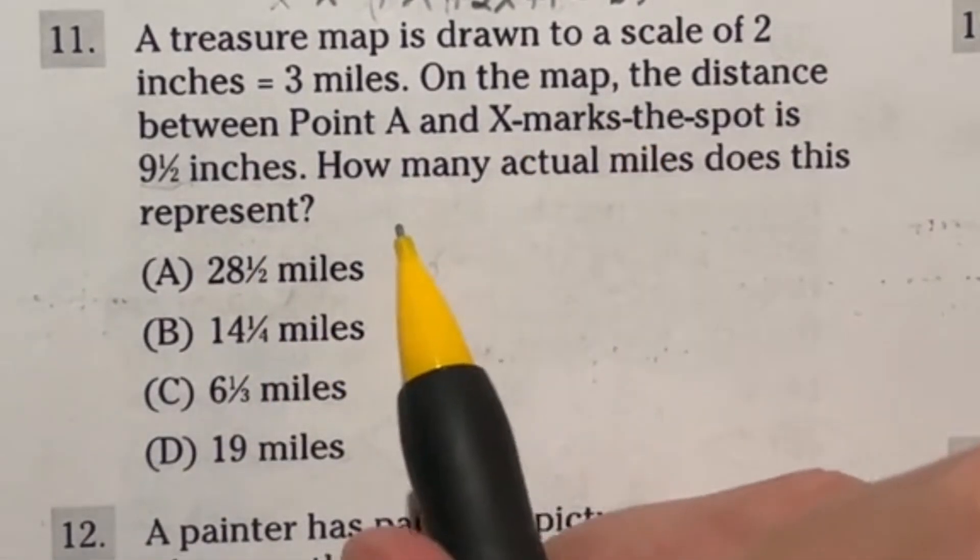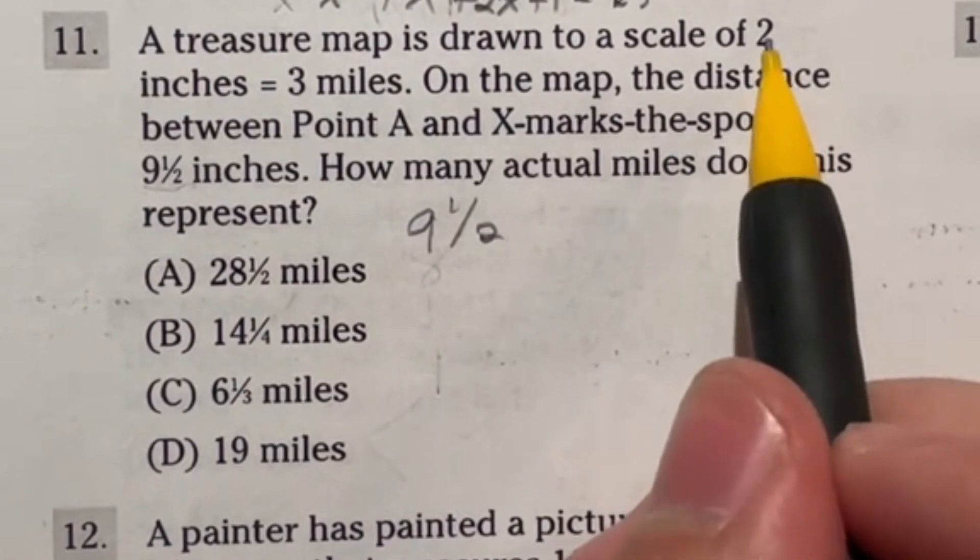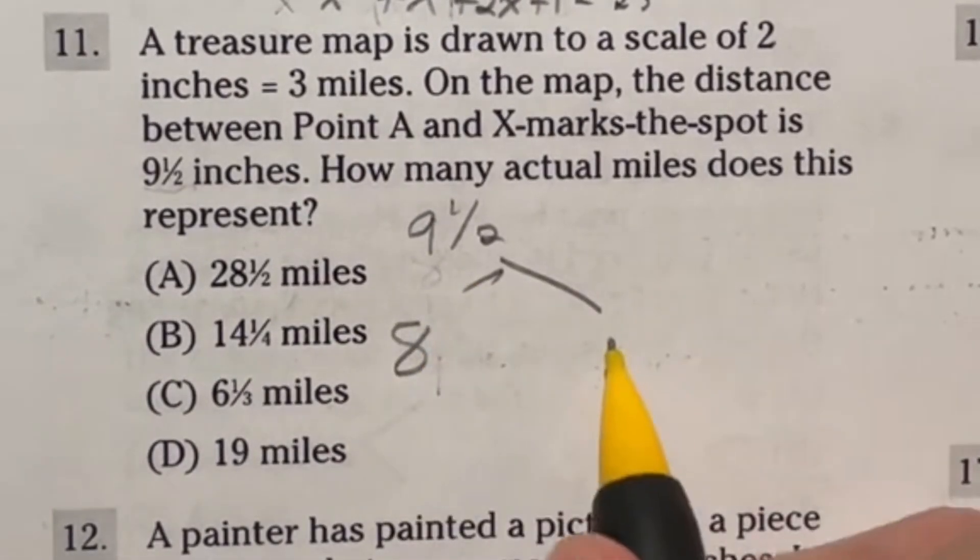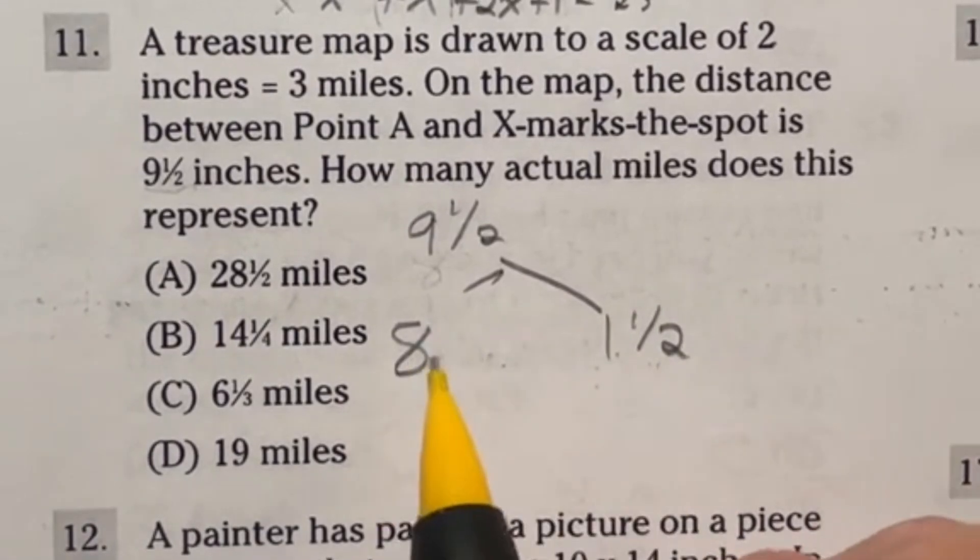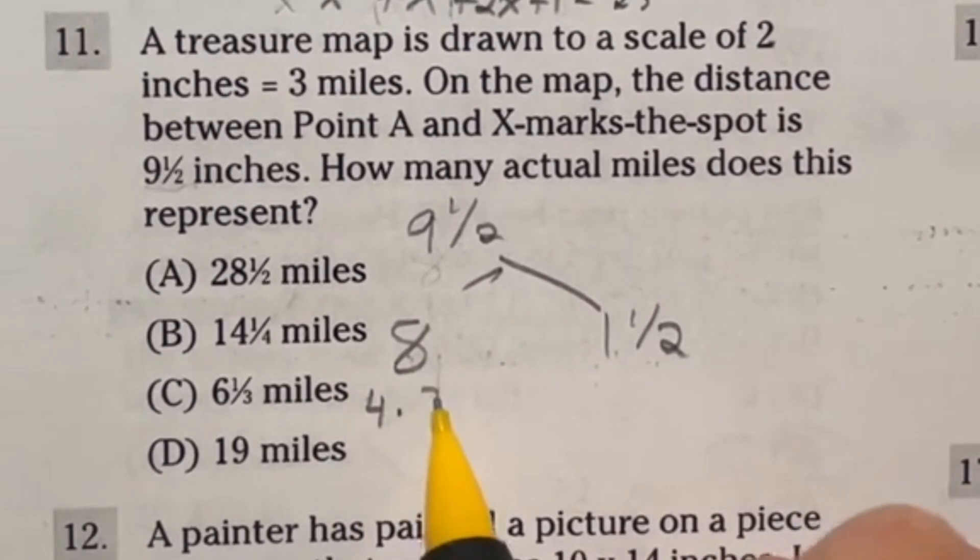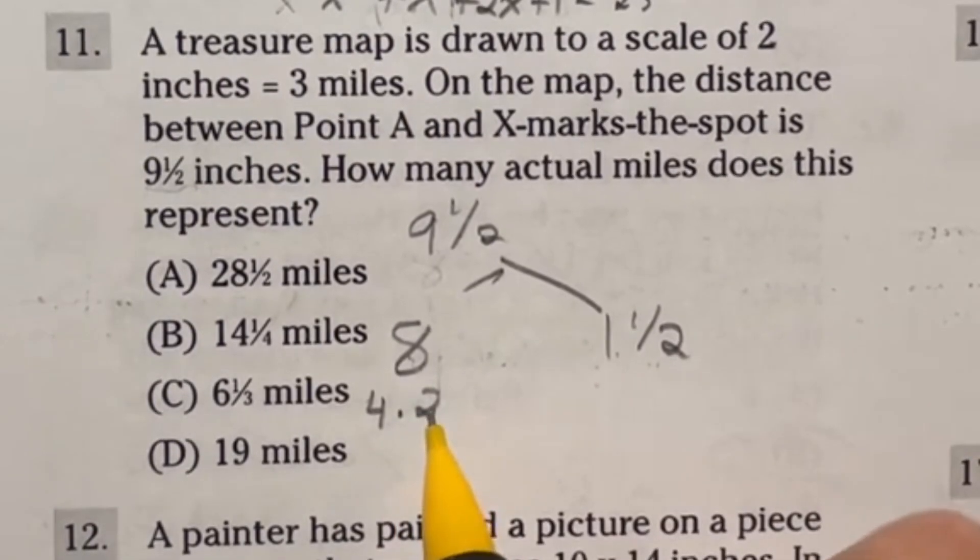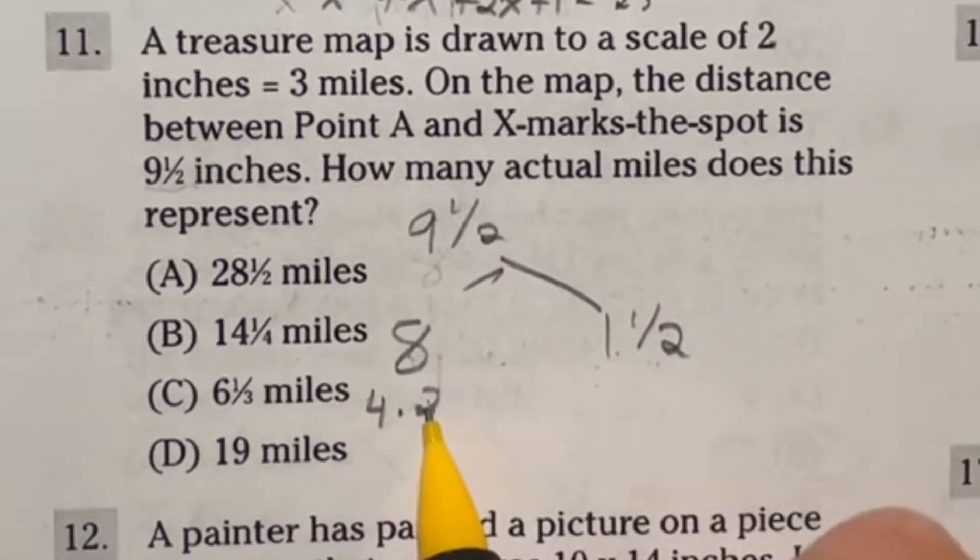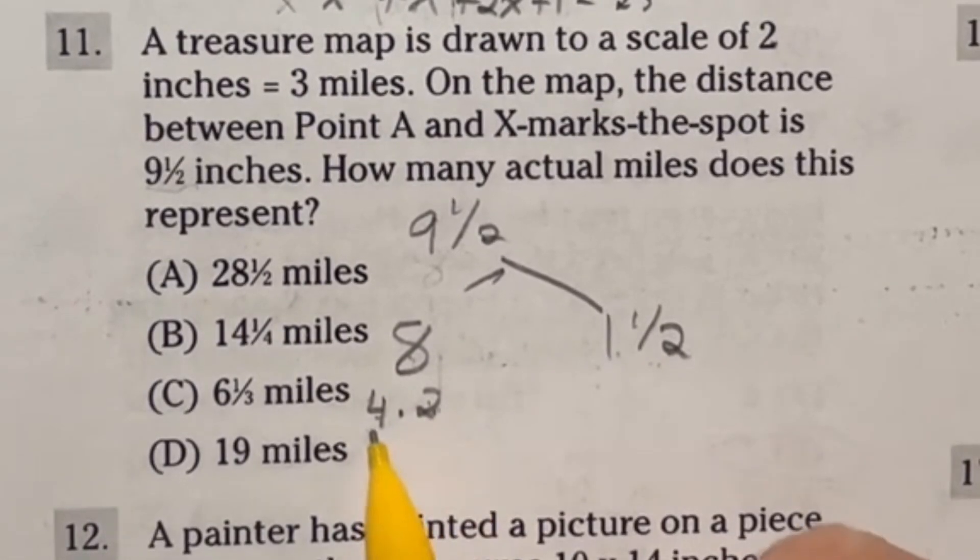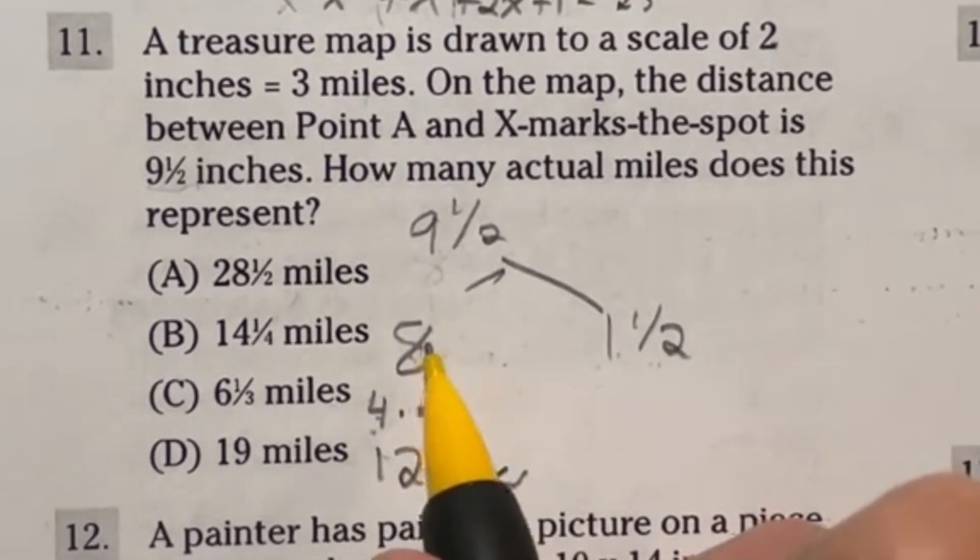So I'm going to break this down into two parts. We have 9½ inches total to work with. Because I know it's 2 inches to every 3 miles, I'm going to split this into 8 and 1½. I do that because the 8 is divisible by 2. The 8 is essentially four times 2, which means I have four of these 2-inch conversions. We know that 2 equals 3 miles, so four times 3 miles is going to give me 12 miles total from this guy.